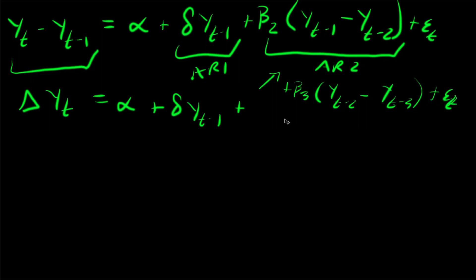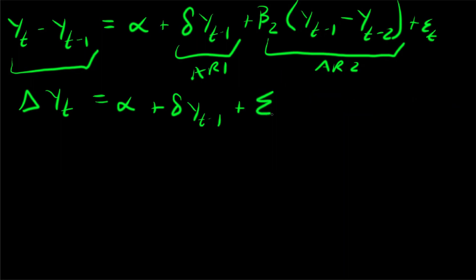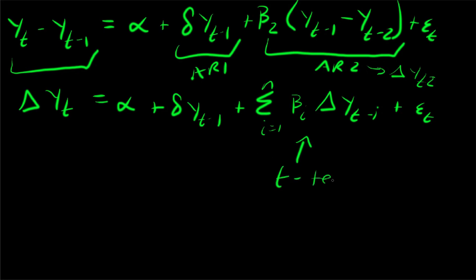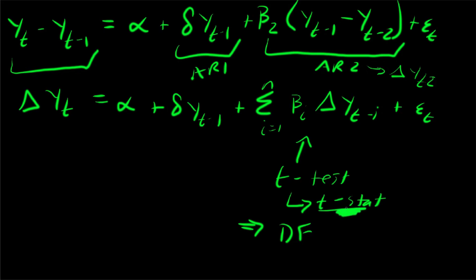The generalized ADF formula is written as: Δy(t) = alpha + delta*y(t-1) + sum(i=1 to n) of beta_i * Δy(t-i) + epsilon(t). You can continue testing all these betas using t-statistics, then use the Dickey-Fuller distribution again with the resulting t-statistic to get significance testing across the different lag values.